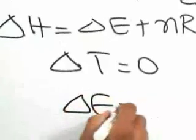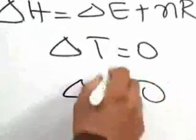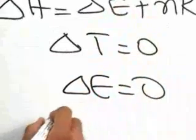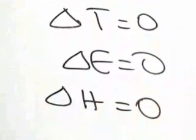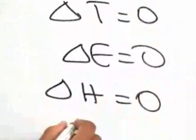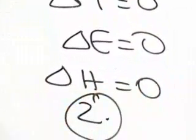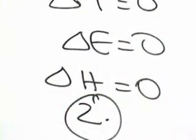Therefore, if you substitute both these values, you will have delta H equal to 0. Looking at the options, option 2 is the correct answer.